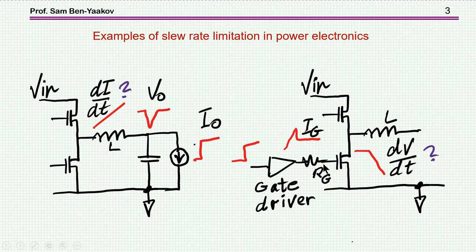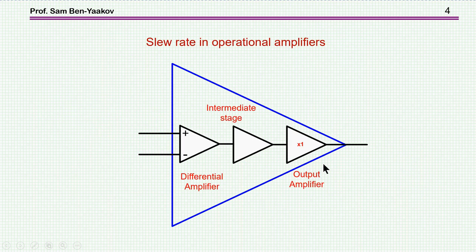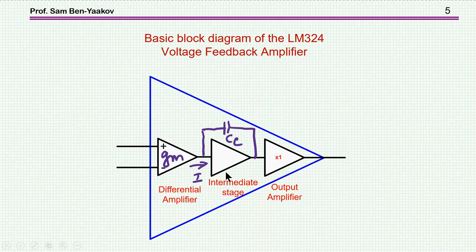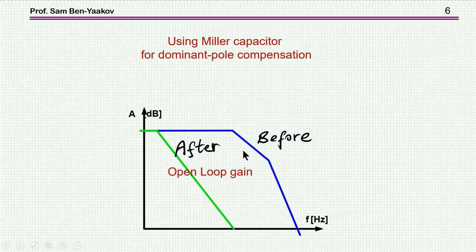These are two examples from power electronics, but now I'm going to the more classical issue of slew rate in operational amplifiers. Here I'm showing a classical op-amp structure with a differential amplifier at the input, an intermediate stage, and an output amplifier. In most modern op-amps there is internal compensation, often done by placing a capacitor across the intermediate stage. So there is a capacitor here.